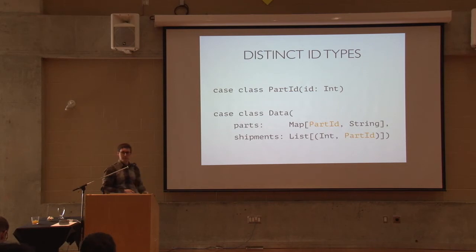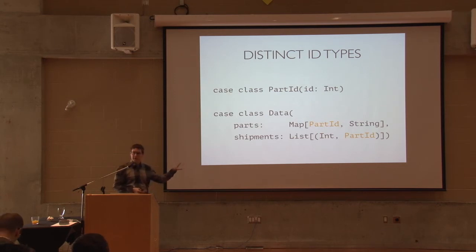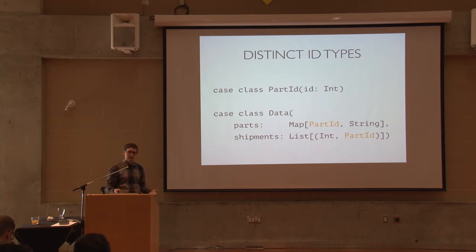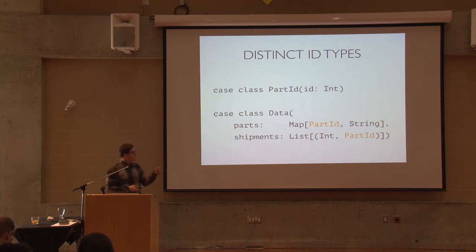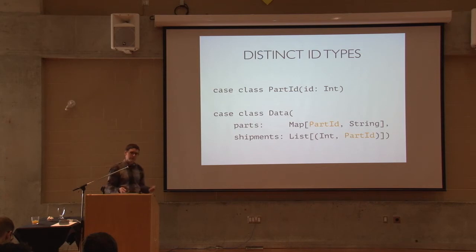However, in both encodings you don't have any referential integrity guarantee. There is no constraint present at compile time that would guarantee that the part IDs referenced in shipments are actually present in the map. So how can we solve this?